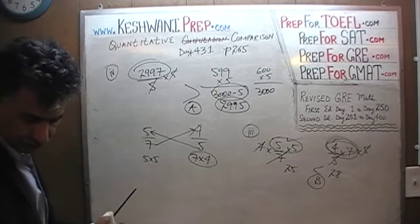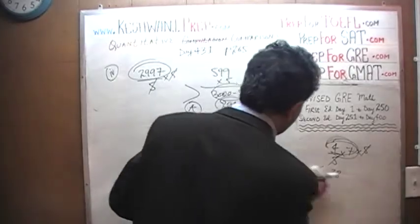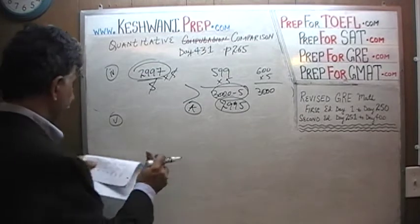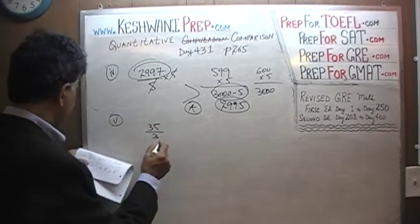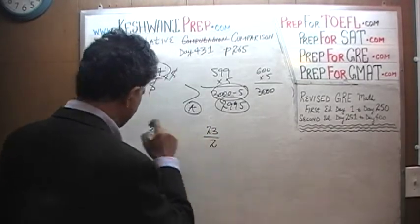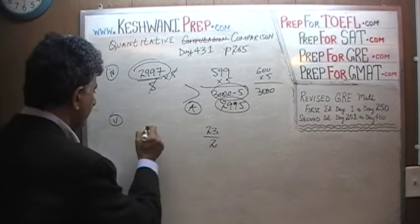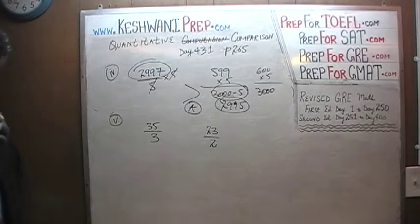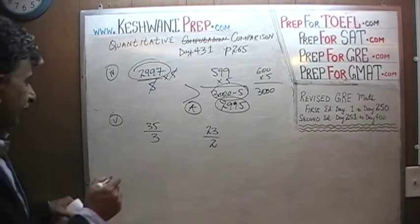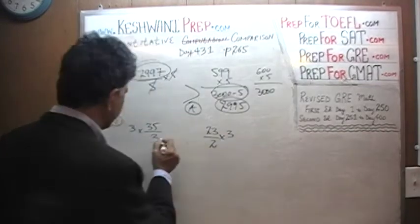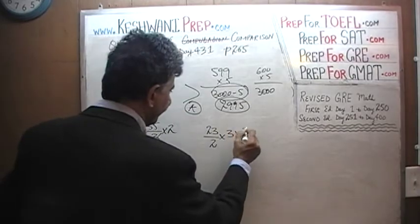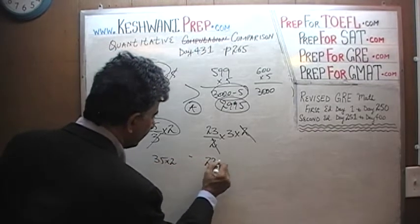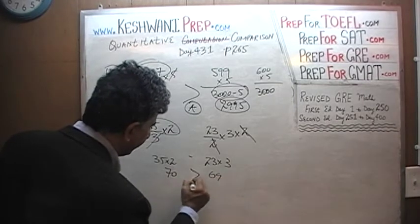Number 5: 35/3 versus 23/2. Multiply both columns by 3 — the 3 drops out. Then multiply both columns by 2 — the 2 drops out. We end up with 35 times 2 versus 23 times 3. 35 times 2 is 70. 23 times 3 is 69. 70 is bigger. The answer is A.